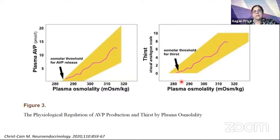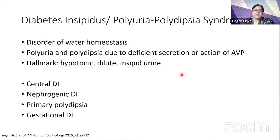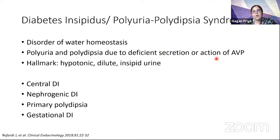The same is true for the thirst mechanism — a slight increase in plasma osmolality will trigger thirst and water intake to restore homeostasis. Diabetes insipidus is characterized by polyuria and polydipsia, primarily due to either deficient secretion of arginine vasopressin or its deficient action, with the hallmark being hypotonic, dilute, insipid urine.